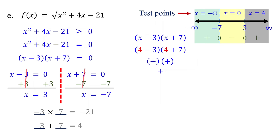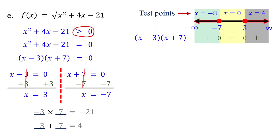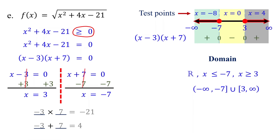The expression equals zero when x equals negative 7 or 3. Because the quadratic expression under the radical must be greater than or equal to zero, identify intervals where it is positive or zero. It is zero when x equals negative 7 or 3, and positive when x is less than negative 7 or greater than 3. Therefore, the domain is all real numbers less than or equal to negative 7 or greater than or equal to 3. The interval between negative 7 and 3 is excluded because we cannot take the square root of negative numbers.